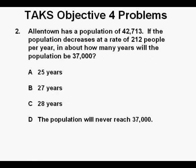Problem 2: Allentown has a population of 42,713. If the population decreases at a rate of 212 people per year, in about how many years will the population be 37,000?